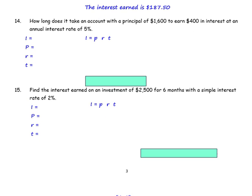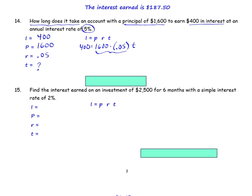Number 14: how long does it take an account with a principal of $1,600 to earn $400 in interest at an annual interest rate of 5%? Identify all parts: the principal is $1,600, we want to earn $400 in interest, and the interest rate is 5%, which is 0.05. Substitute the values: $400 equals $1,600 times 0.05 times t. Simplify $1,600 times 0.05 to get 80, then divide both sides by 80. It will take 5 years.